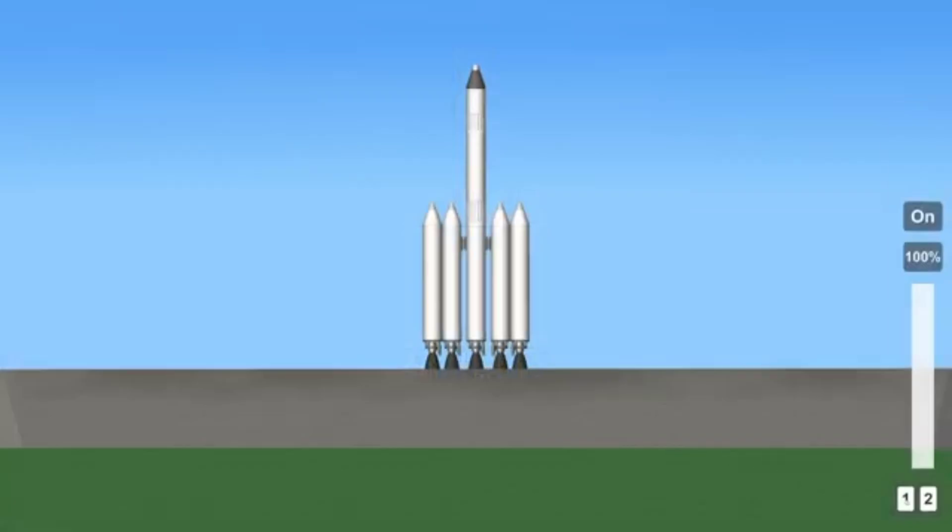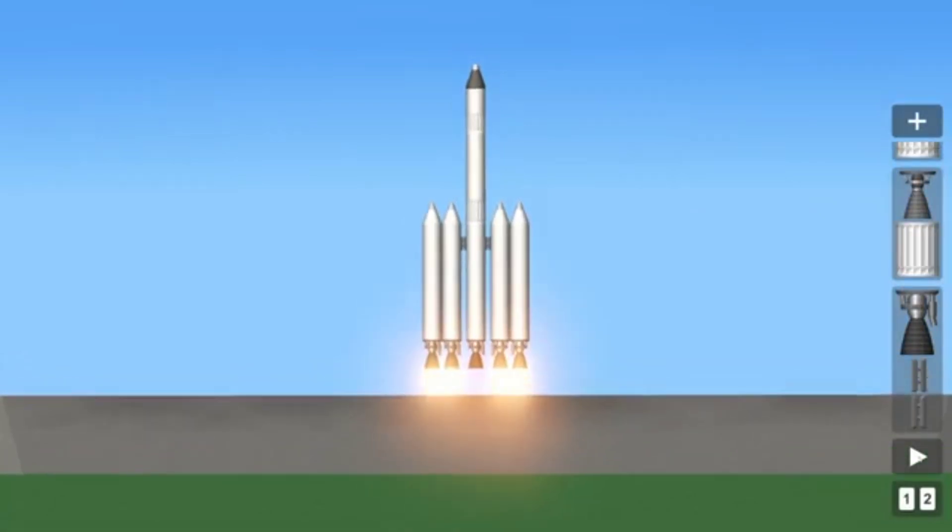To use staging during a flight, open the Staging menu. You can hit the Activate Stage button to trigger each event one by one in the order that you set them up.